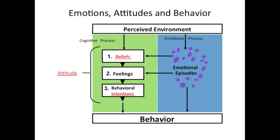Beliefs are sometimes referred to as cognitions — the cognitive aspect of an attitude. If we say 'I love chocolate ice cream,' we have a cognition about it because we've had it before and really enjoyed it. Feelings are sometimes referred to as the affective component of attitude — a conscious positive or negative evaluation of the attitude object. In 'I love chocolate ice cream,' the word 'love' is the affective component.